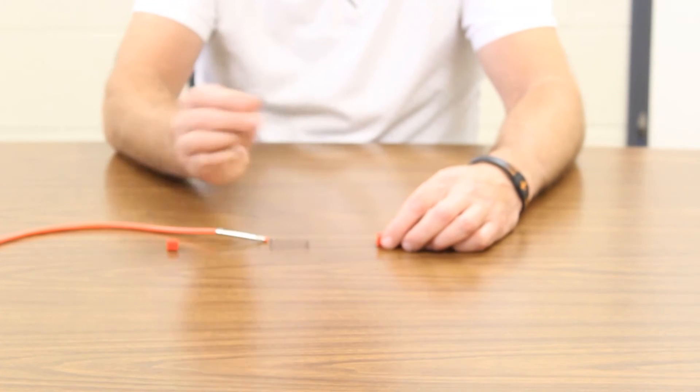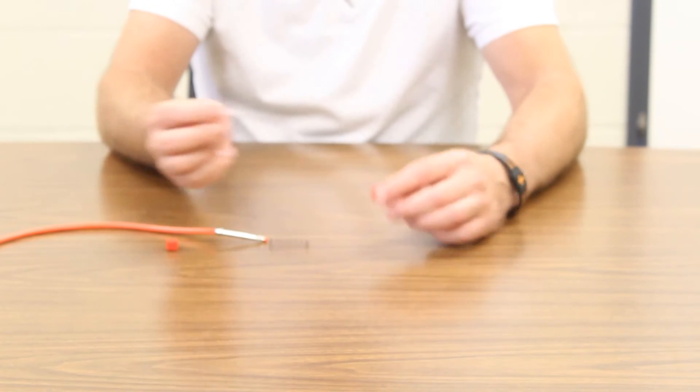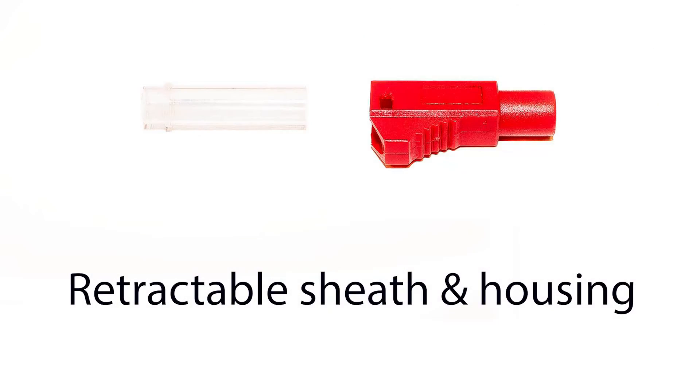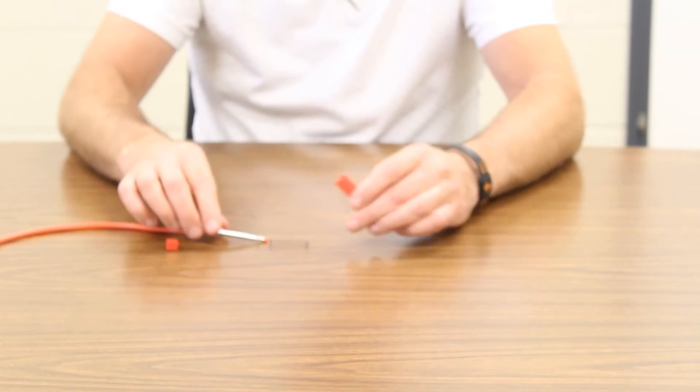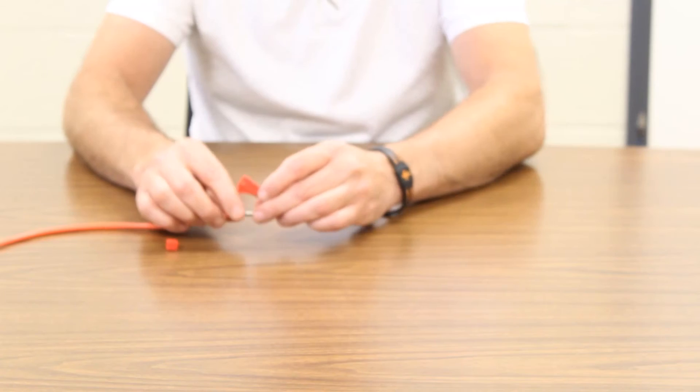The next step is to take the retractable shroud, put it into the bigger plastic piece, take the spring, put it over the banana plug.